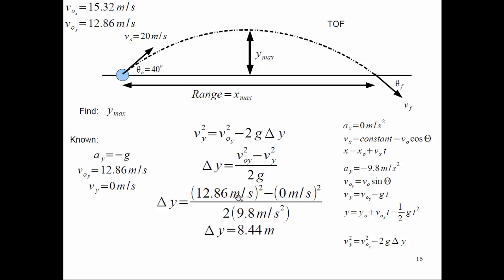G is 9.8 meters per second squared. The acceleration in the Y direction is minus G — so wherever you see G, plug in 9.8, not minus 9.8, because we've already taken care of the minus sign. We end up with a maximum displacement in the Y direction of about 8.4 meters.